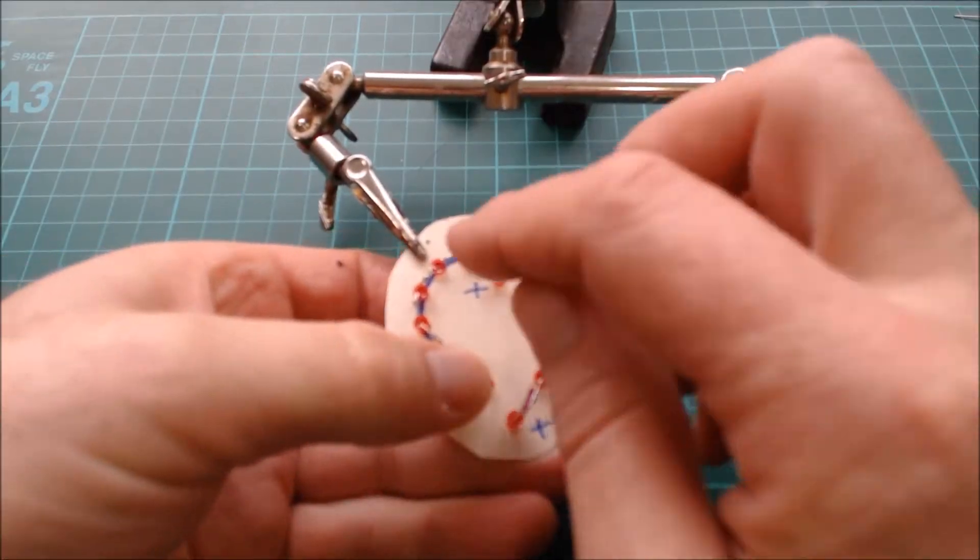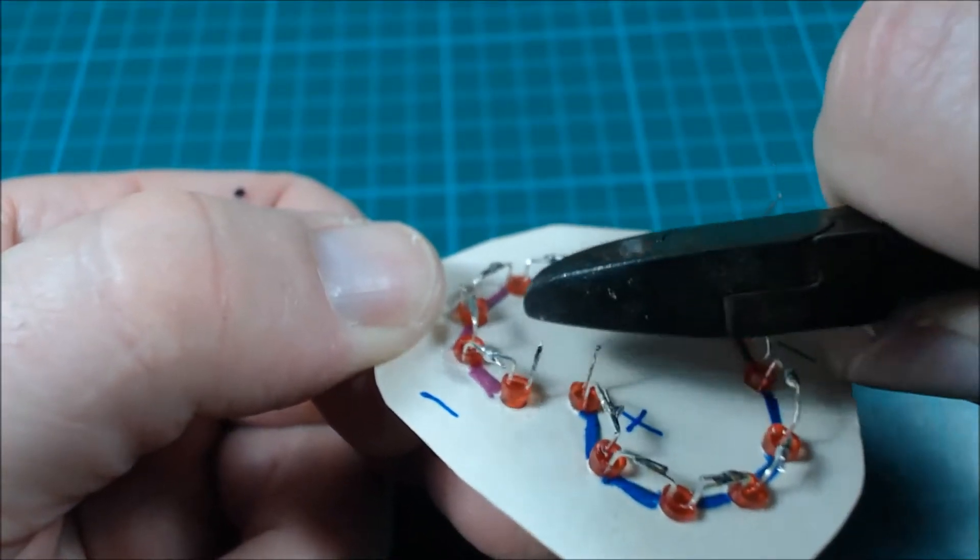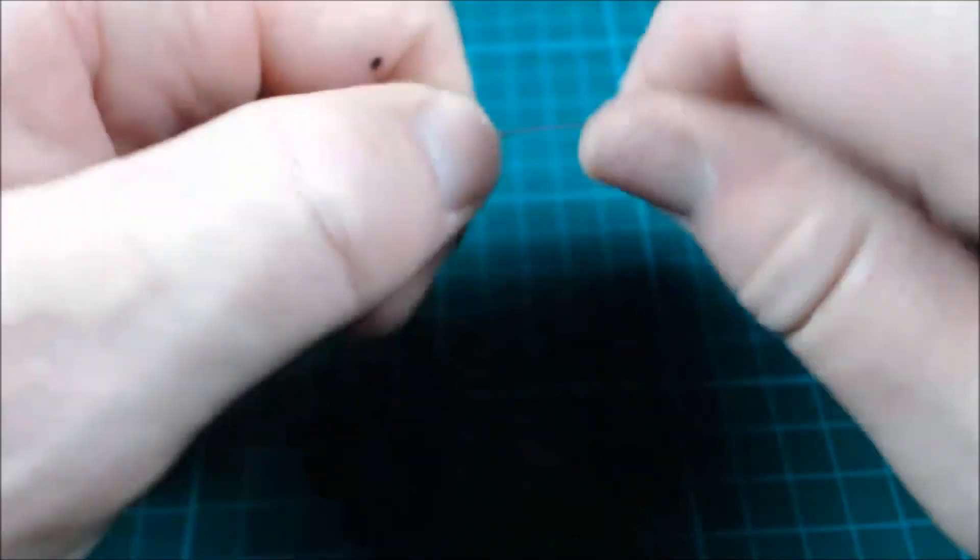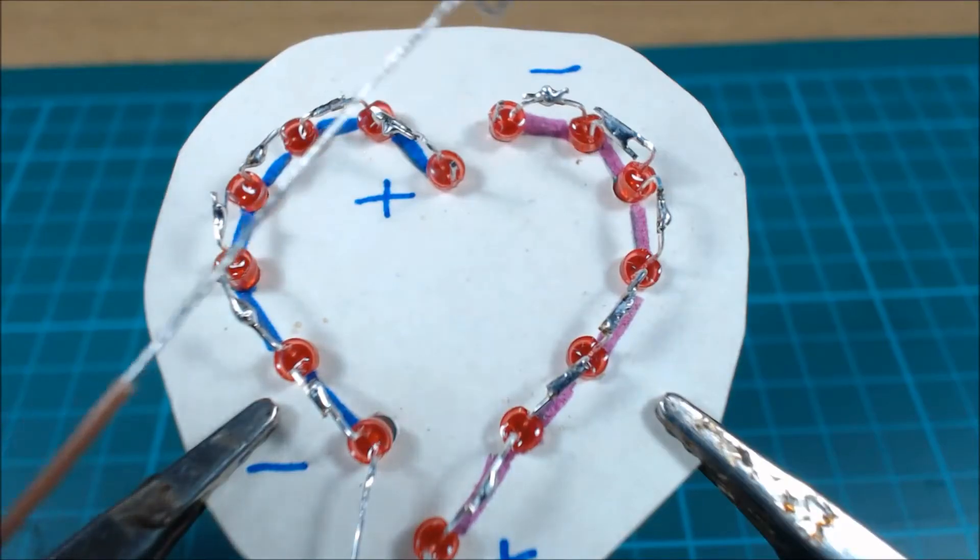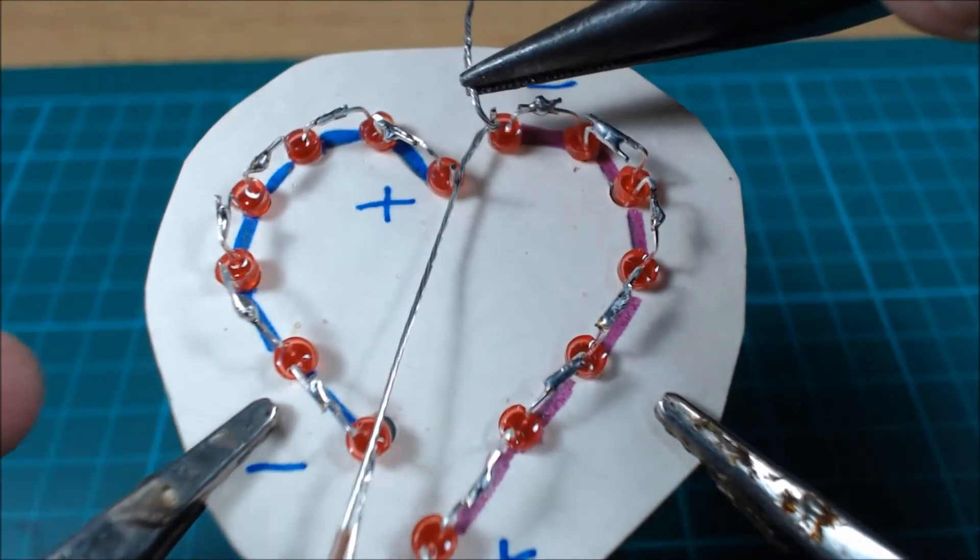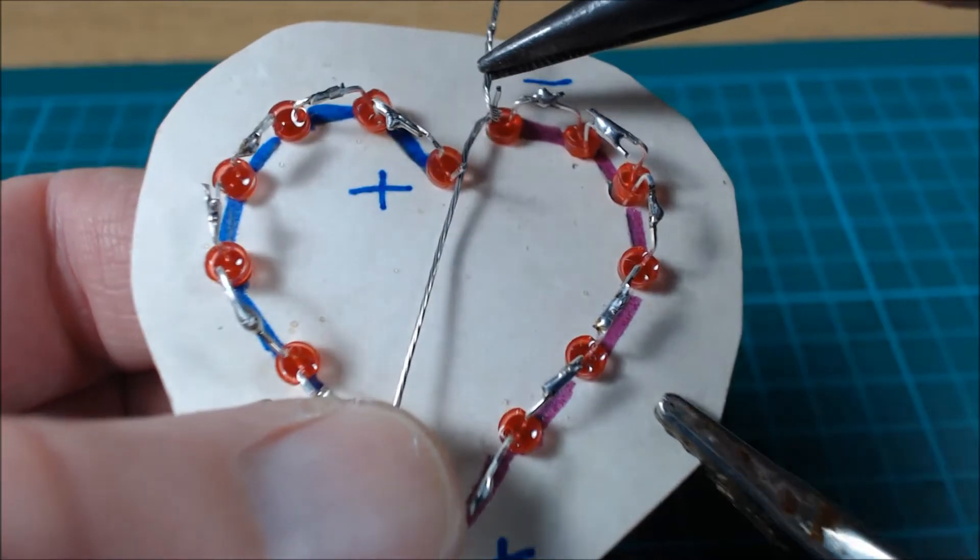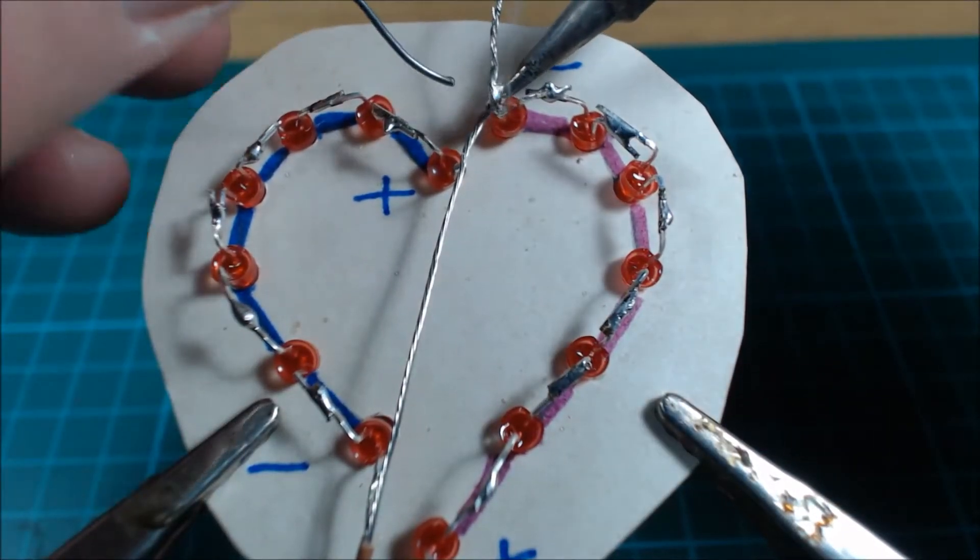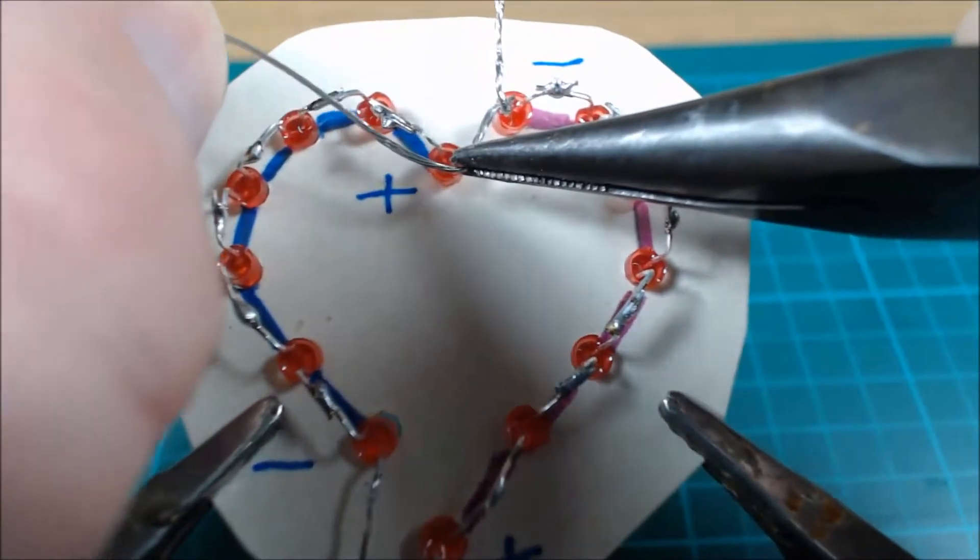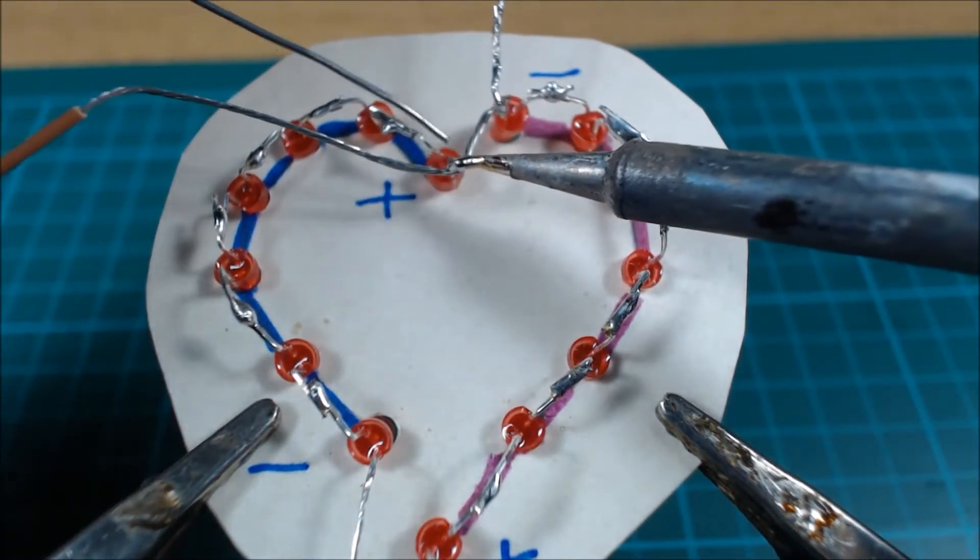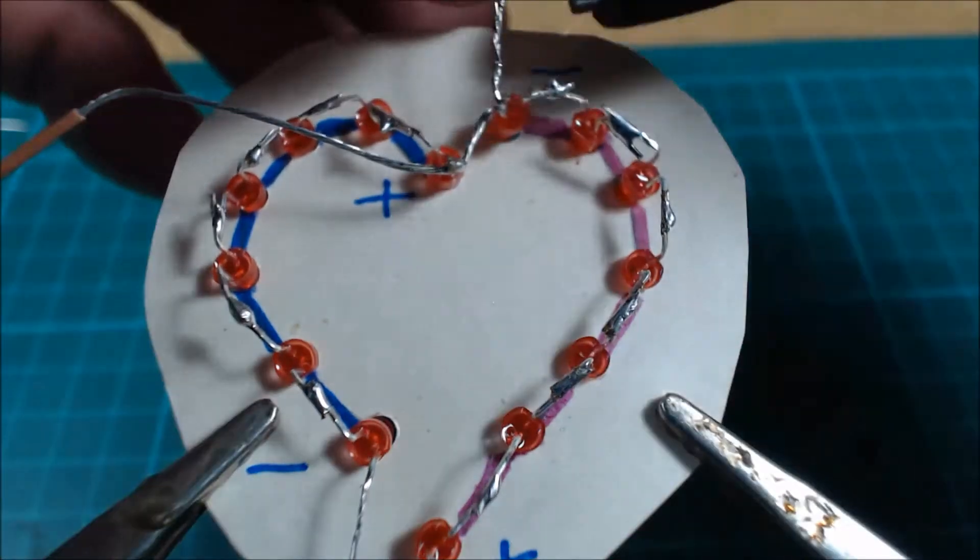That's both sides completed and now we're going to join them using some flexible copper wire. Remove the insulation for greater flexibility and give it a twist. Then use the wire to connect the unused LED leads at the top of the heart and solder in place. Trim the excess wire.